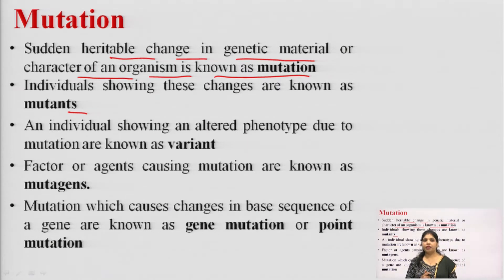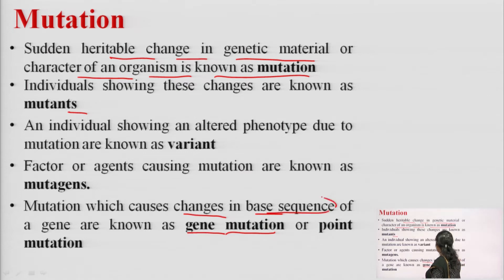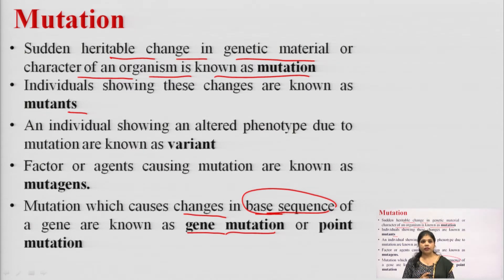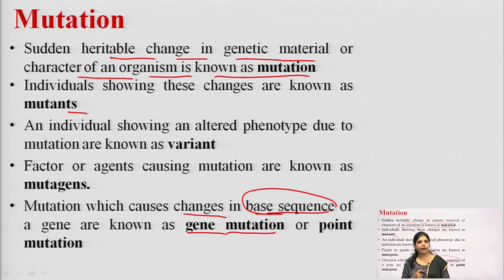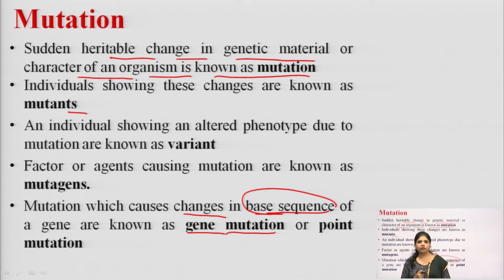Mutation which causes changes in the base sequence of the genes is known as gene mutation or point mutation. Changes are occurring in the gene, that's why it is known as gene mutation. Base sequences which are adenosine, guanosine, thymine, uracil — if any kind of changes occur in these, that is known as gene mutation or point mutation.